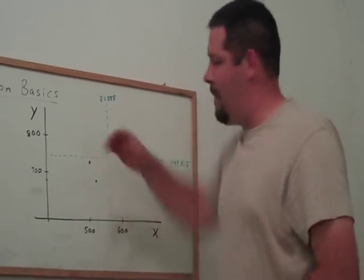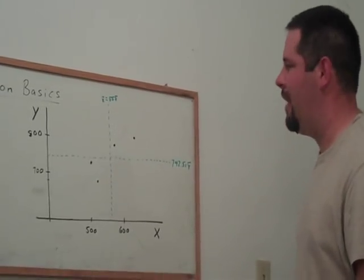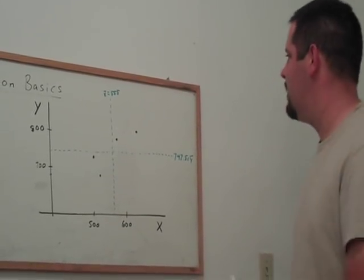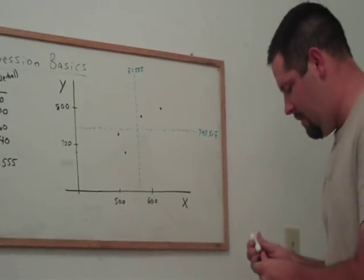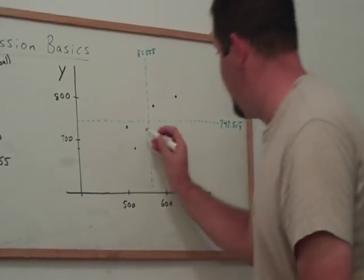And in fact, the best line might actually not connect all four, might not even connect to one of these points. In this case, the best fitting line will look something like this.